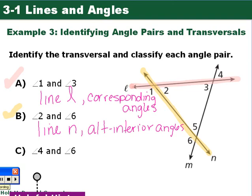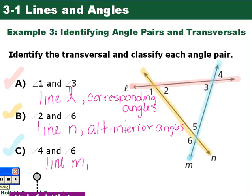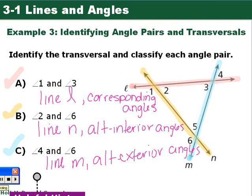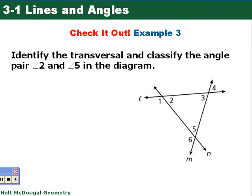Our last pair of angles is angle 4 and angle 6. Angle 4 and angle 6 fall on line M, so line M is our transversal. They're both on the exterior — outside the two lines — and on opposite sides of the transversal, so these are alternate exterior angles. Now you'll do one on your own: identify the transversal and the type of angles that angle 2 and angle 5 form. Write down any questions you have for next class.